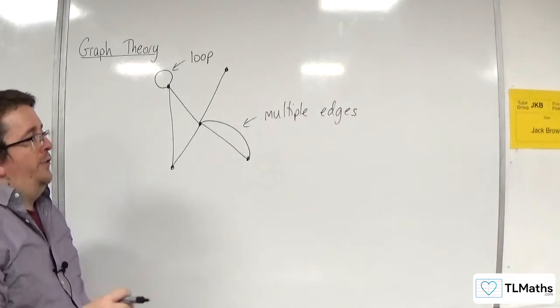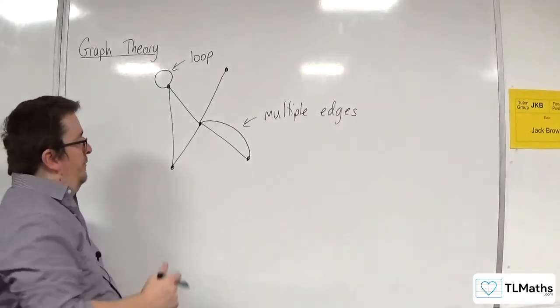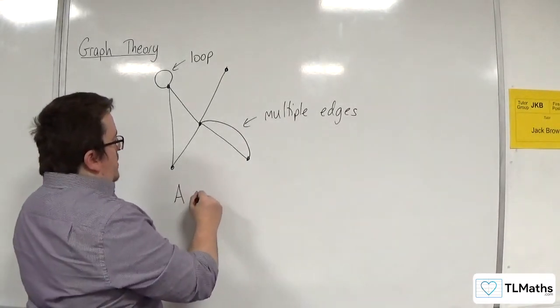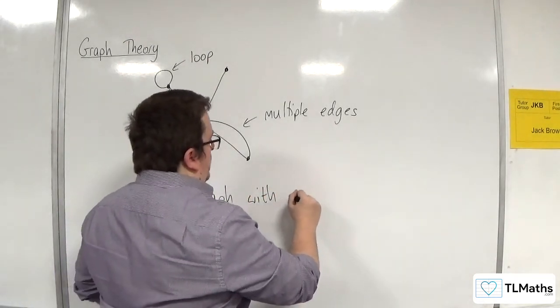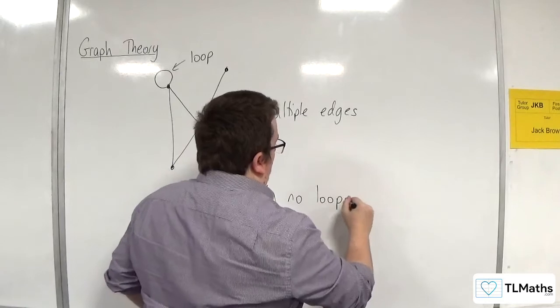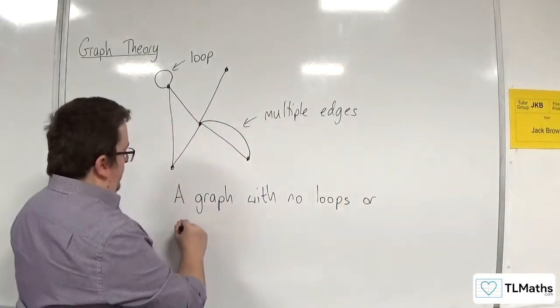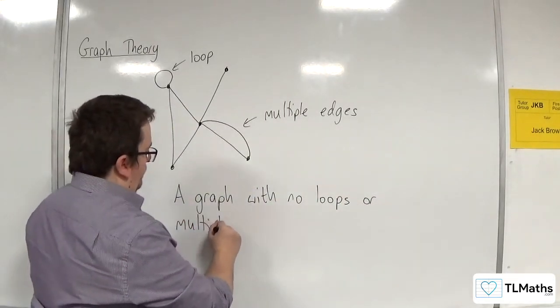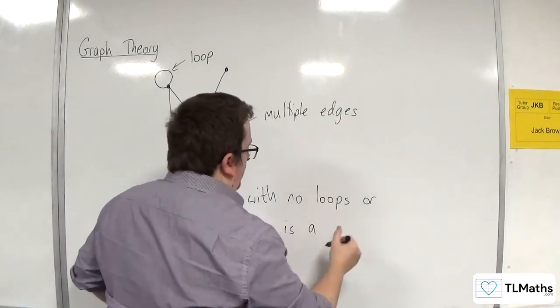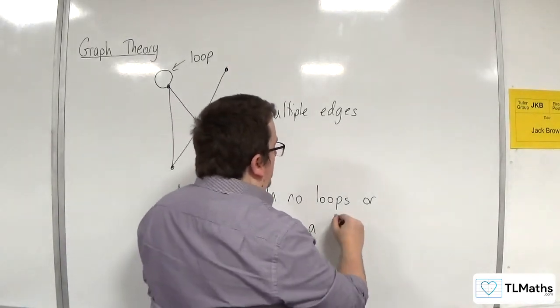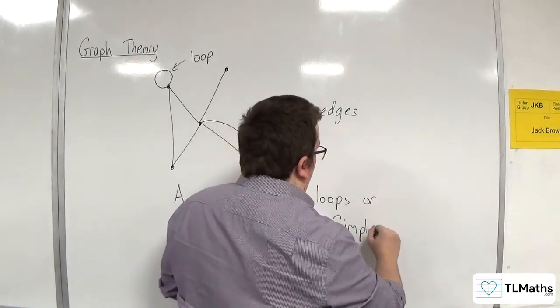And we refer to a simple graph. So a graph with no loops or multiple edges is referred to as a simple graph.